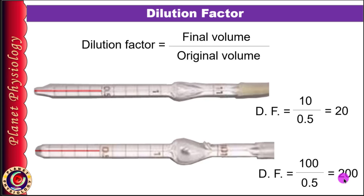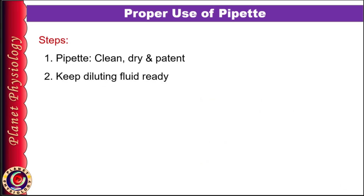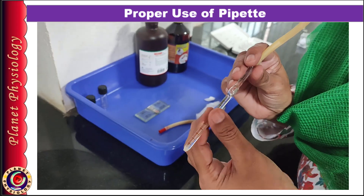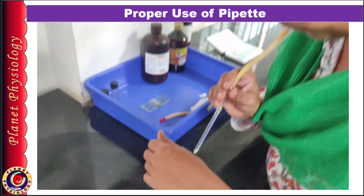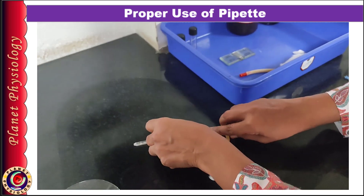Now let's study how to collect and dilute the blood sample using these pipettes. You can obtain a capillary blood sample from the fingertip, or use blood collected in the lab by venipuncture. I will describe how to collect the sample from a finger prick. First, before taking the finger prick, make sure your pipette is clean, dry, and patent. To check for patency, place the mouthpiece in the mouth and blow through it; feel for the air current at the dorsum of your hand. If an air current is felt, the pipette is patent.